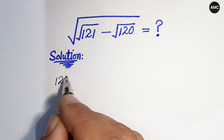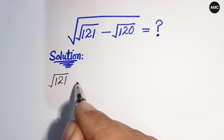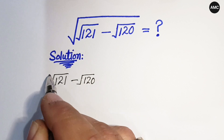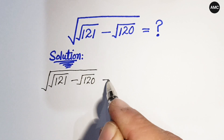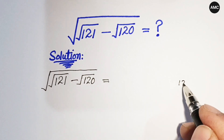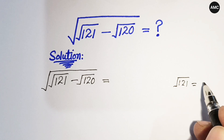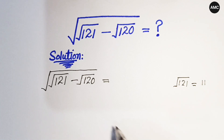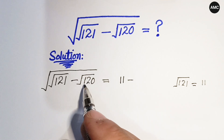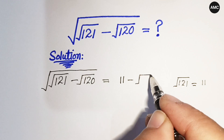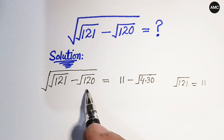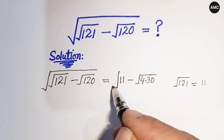Our problem is the square root of (√121 minus √120). First of all, we see that √121 is equal to 11. Now we rewrite 120 as 4 times 30, so 4 times 30 equals 120. Our expression becomes the square root of (11 minus √120), where 120 is written as 4 times 30.